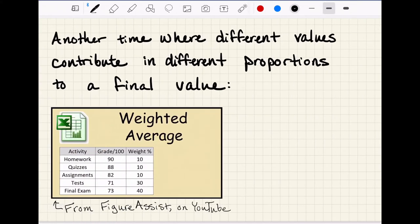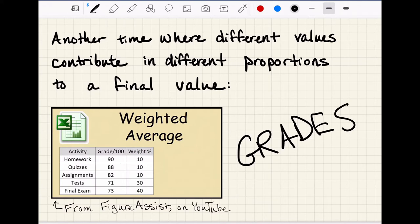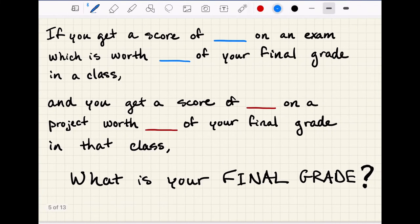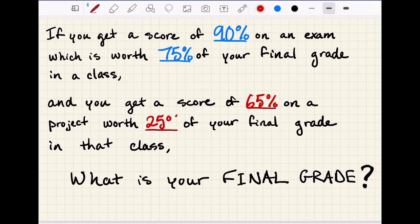So to help think about this, another time where different values contribute in different proportions to a final value is when it comes to grades. For example, if you get a score of 90% on an exam which is worth 75% of your final grade in a class, and you get a score of 65% on a project worth only 25% of your final grade in that class, how would you go about figuring out what your final grade was?